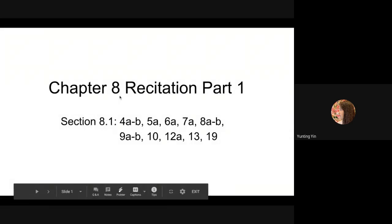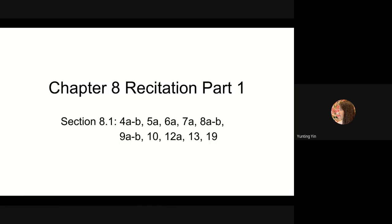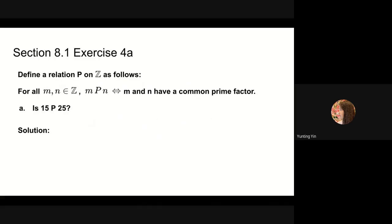Today's presentation covers the problems in section 8.1. The first problem we will solve is 4a and 4b. Define a relation p on integers as follows: for all integers m, n, m is in relation p with n if and only if m and n have a common prime factor.